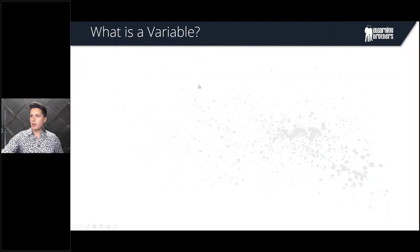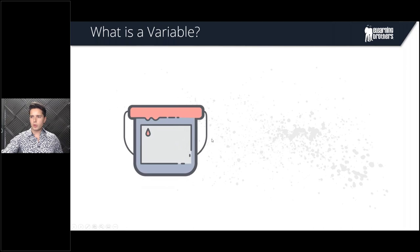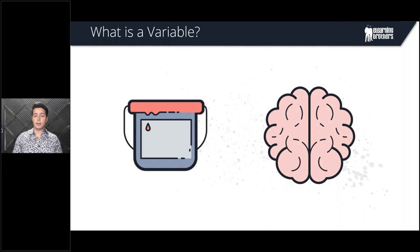So what's a variable? It's kind of hard to describe what a variable is especially when it comes to eLearning and Lectora, but some popular analogies are that a variable is like a container, a bucket, or a brain. What that means is a variable is just a place where you can store information that you can grab from later as you're developing your course.